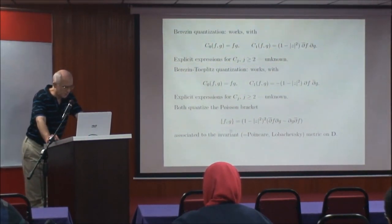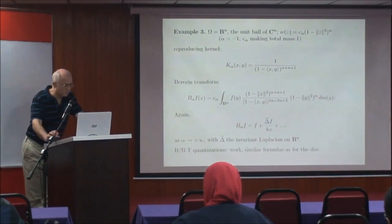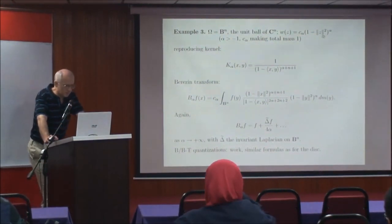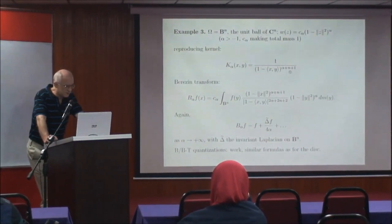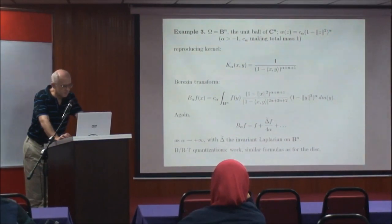Both this version and this version quantize the invariant Poisson bracket associated to the Lobachevsky metric — the pseudo-hyperbolic metric of the disc. Third example: one can of course go to higher dimensions, and instead of the disc consider the unit ball in C^n. Again, with the measure 1 minus mod z squared to some power alpha, with the constant C_alpha to make things of total mass 1. The reproducing kernel is given by a formula that generalizes the one for the disc. One gets the Berezin transform and the same asymptotic expansion, this time with the invariant Laplacian of the ball.